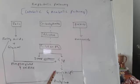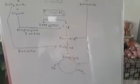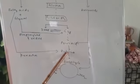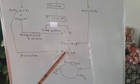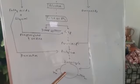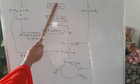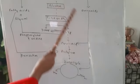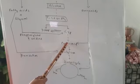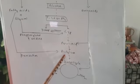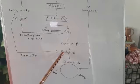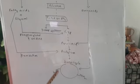Pyruvic acid enters into the link reaction of aerobic respiration, and after the link reaction, acetyl-CoA is produced. This acetyl-CoA enters into the Krebs cycle where the carbon is completely broken down. During glycolysis, glucose converts into pyruvic acid; then during the link reaction, pyruvic acid converts into acetyl-CoA, which enters the Krebs cycle where the molecule is completely broken down releasing all the carbons.